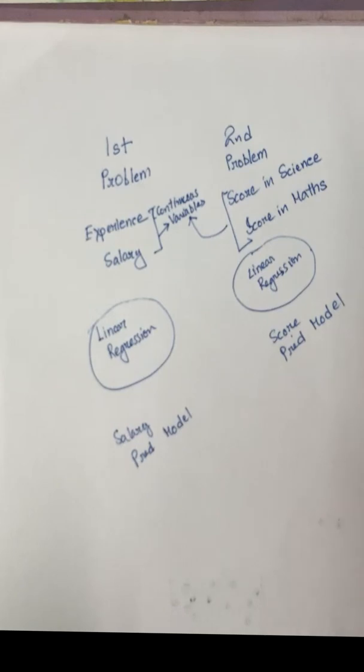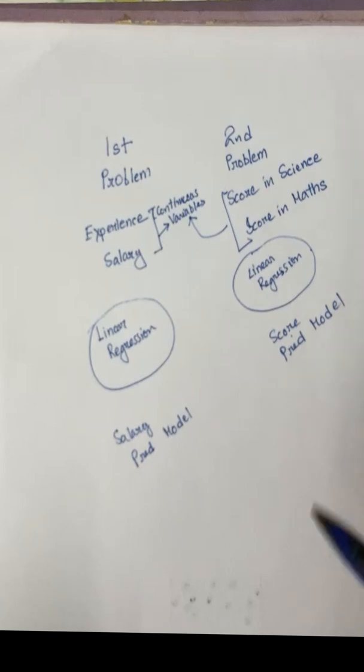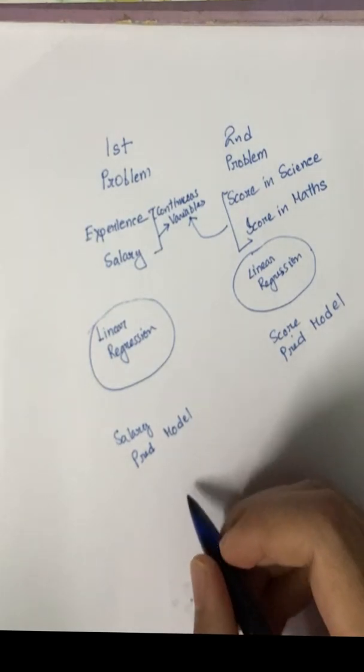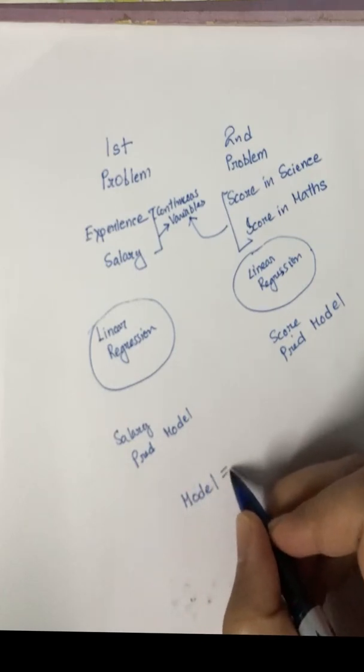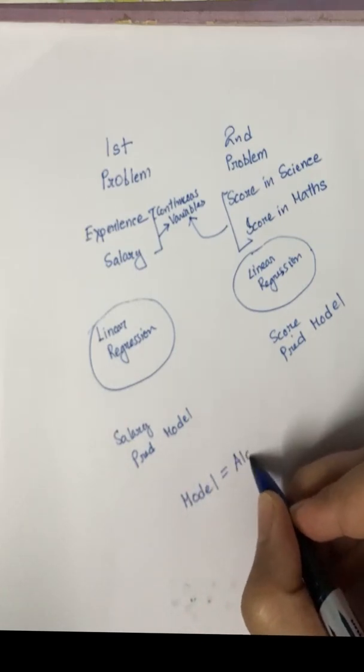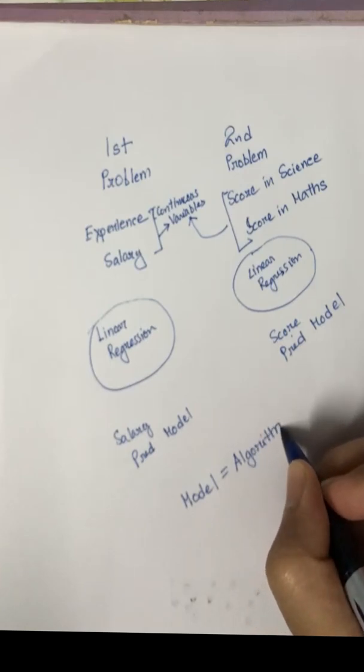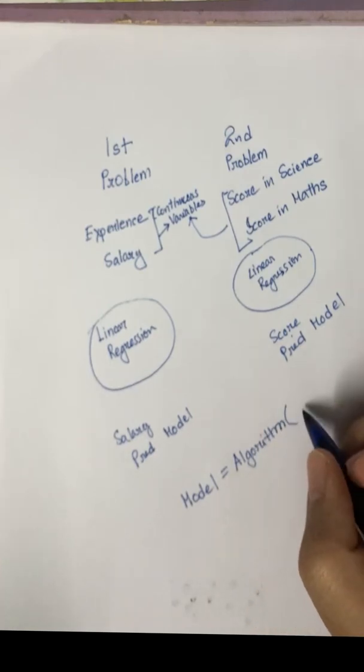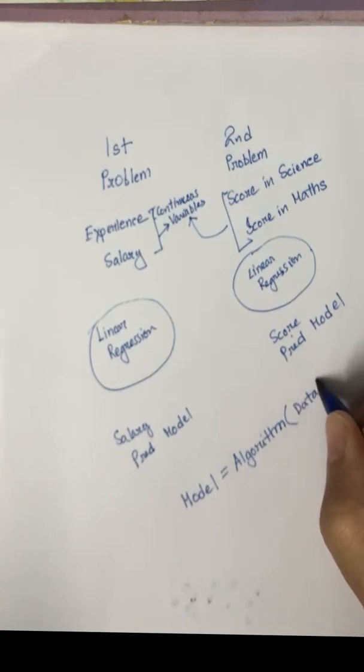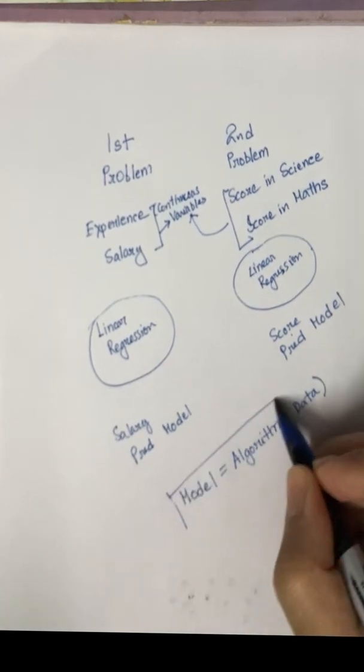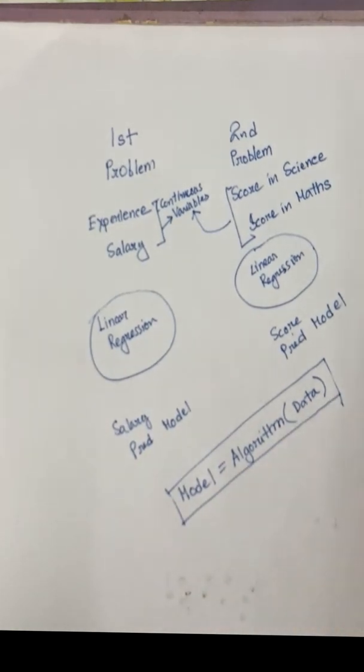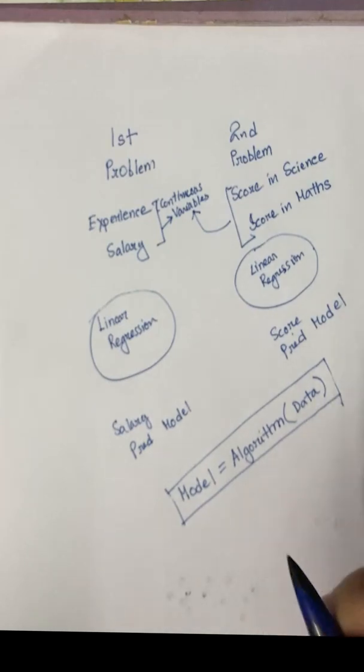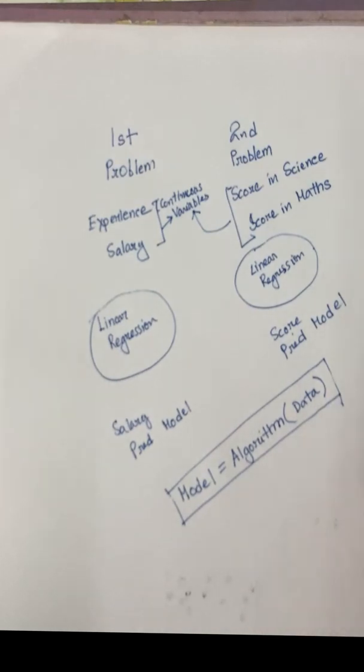But the algorithms here are the same. So the algorithms can be same but the models are different and named differently as per the context of the problem statement. So in simple words, in a mathematical formula if we have to write it, we can write it as: this model is nothing but algorithm which takes the input as data. So this is what we call the difference between a model and algorithm. Thank you.